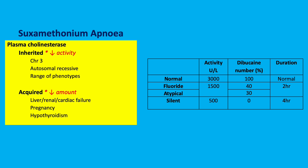The acquired form results in a reduced amount of enzyme, due to liver failure, renal failure, cardiac failure, pregnancy, or hypothyroidism. The inherited form involves the correct amount of enzyme but with reduced activity. It is an autosomal recessive condition located on chromosome 3, with a range of different phenotypes.